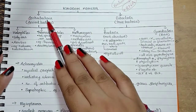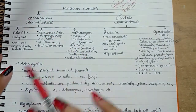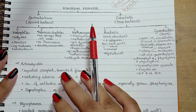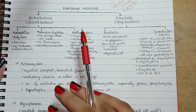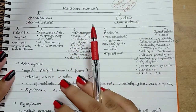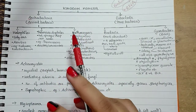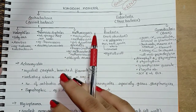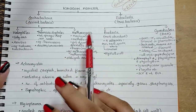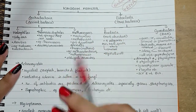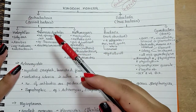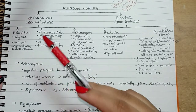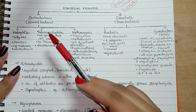Archaebacteria are the oldest living beings and most primitive bacteria or monerans. They are a special kind of bacteria because they can live in some of the most harsh habitats.